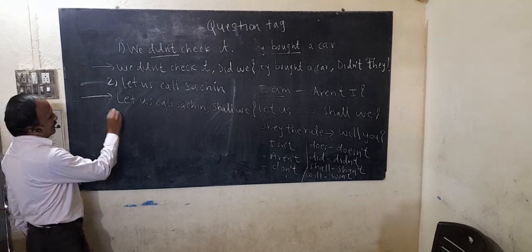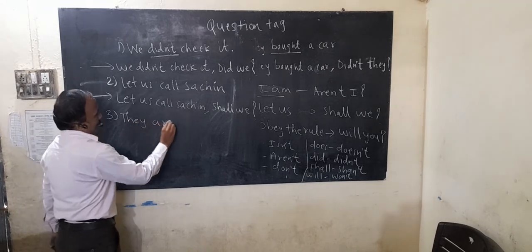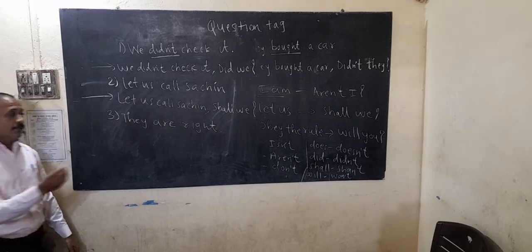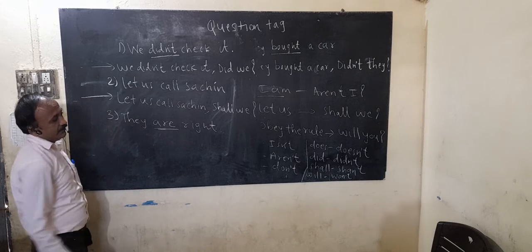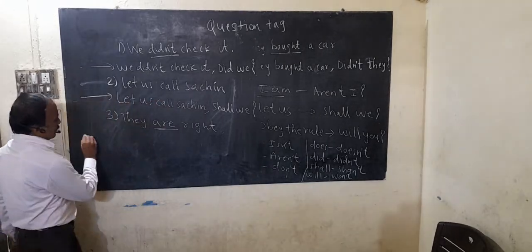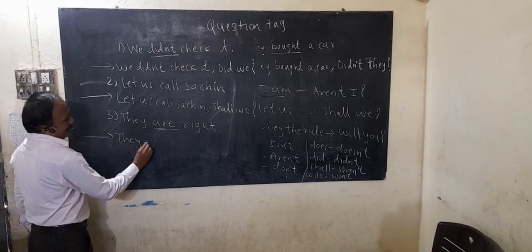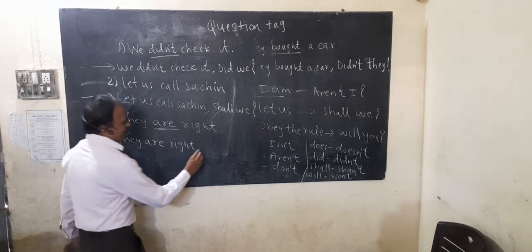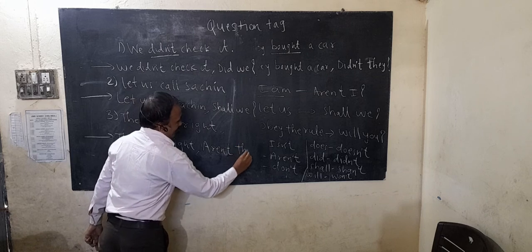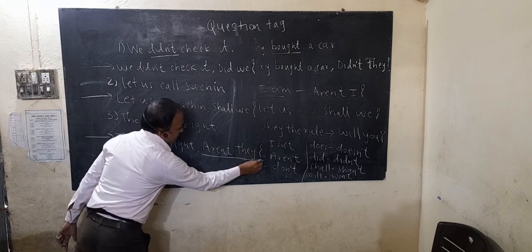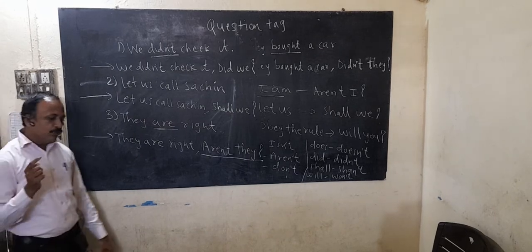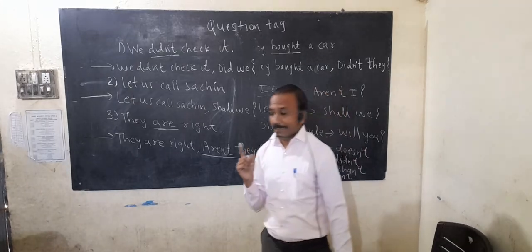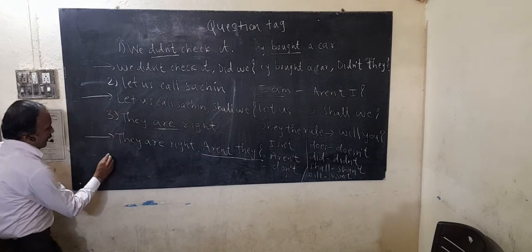Another example: 'They are right.' The statement is positive and the helping verb is 'are'. 'Are' becomes 'aren't', so the question tag is: 'They are right, aren't they?' This is called a question tag — we use it to check whether a statement is right or wrong.